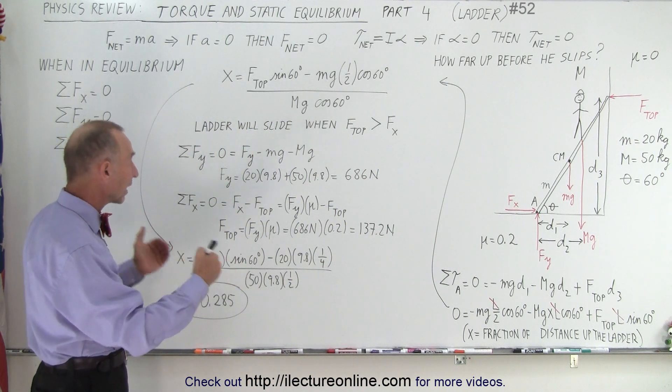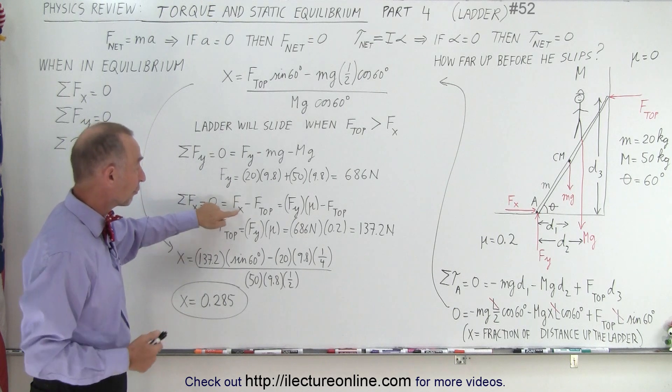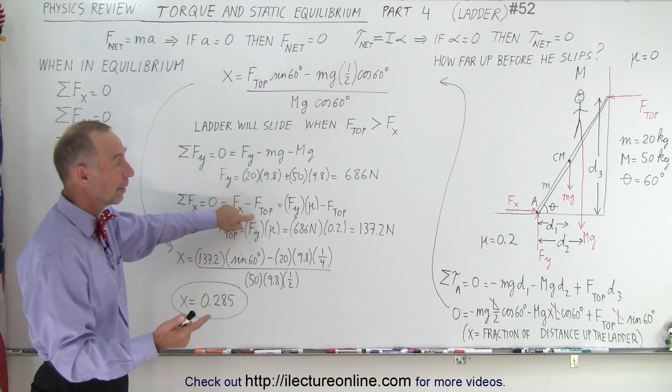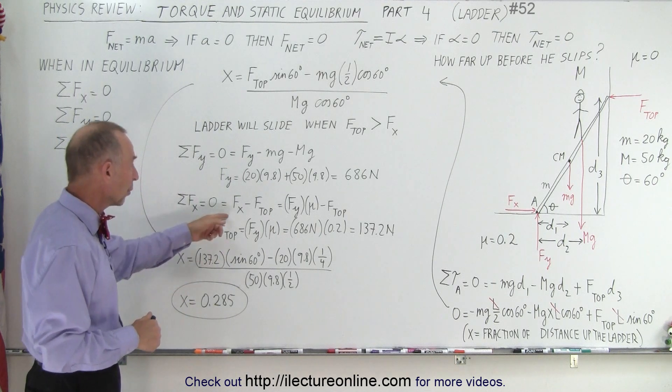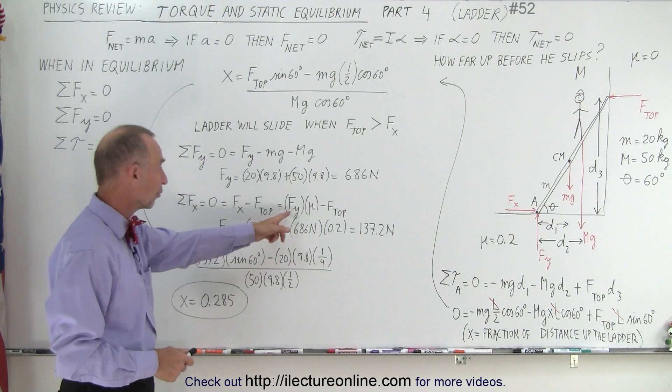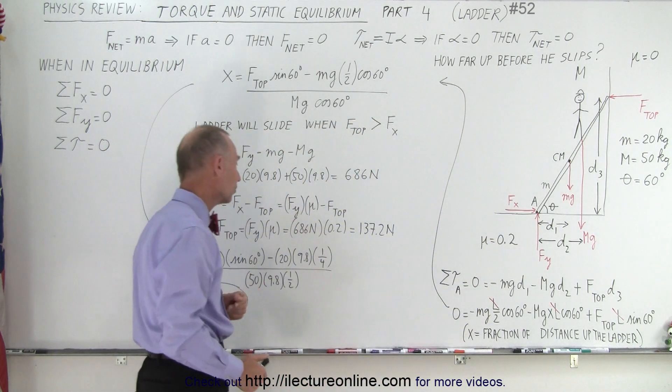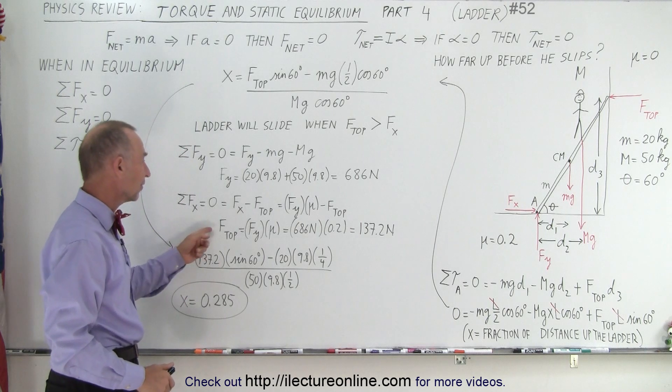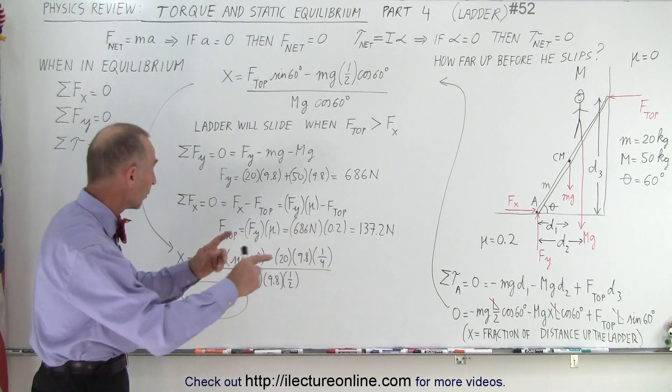Then we sum up all the force in the x direction. So the force pushing to the right which is now the friction force minus the force at the top must equal zero if they're right at the hairy edge of equilibrium where F sub x is the maximum force the friction can be which is the force in the normal direction, the normal force here times mu. So when we solve for that we get the force at the top being 137.2 newtons.